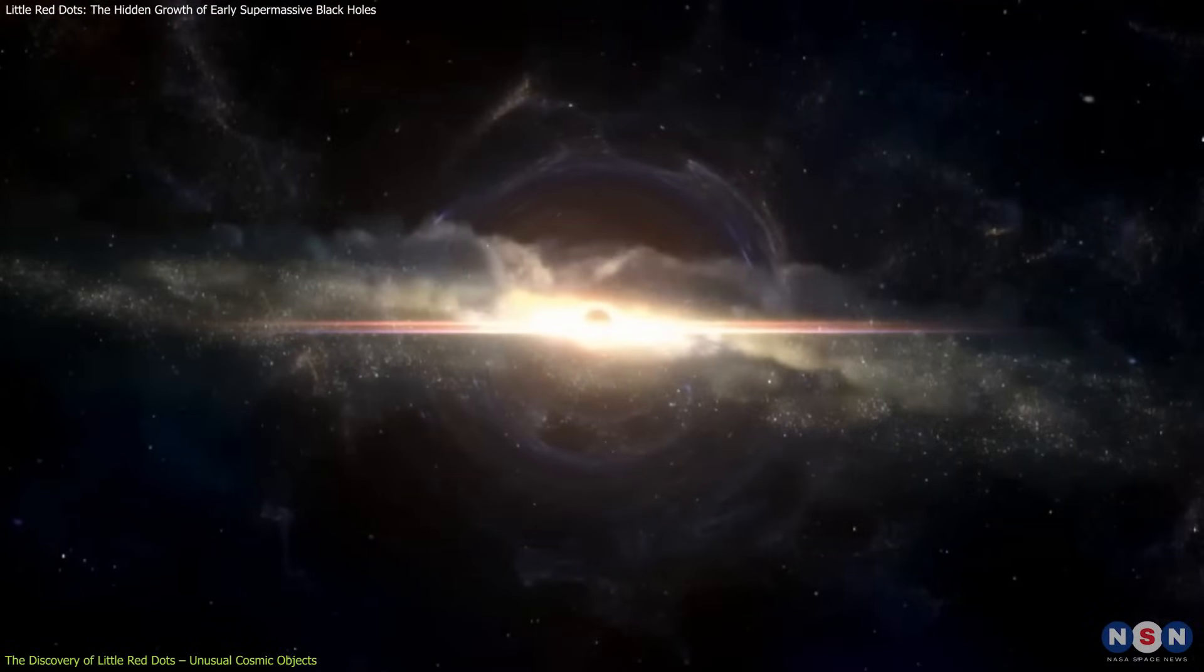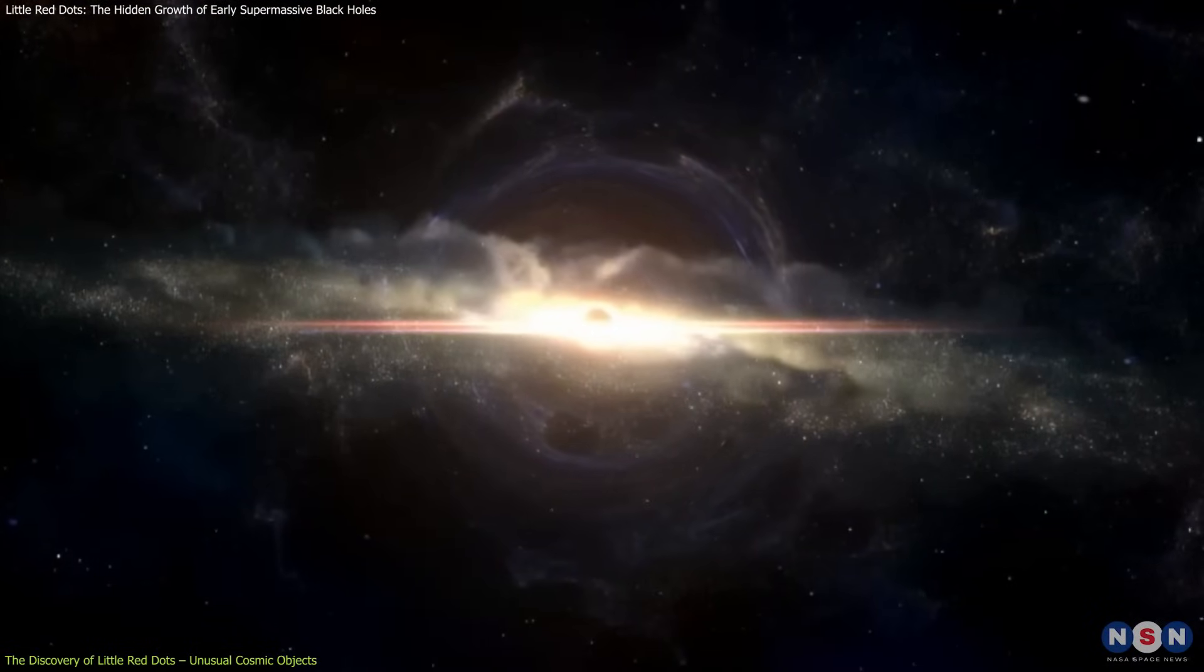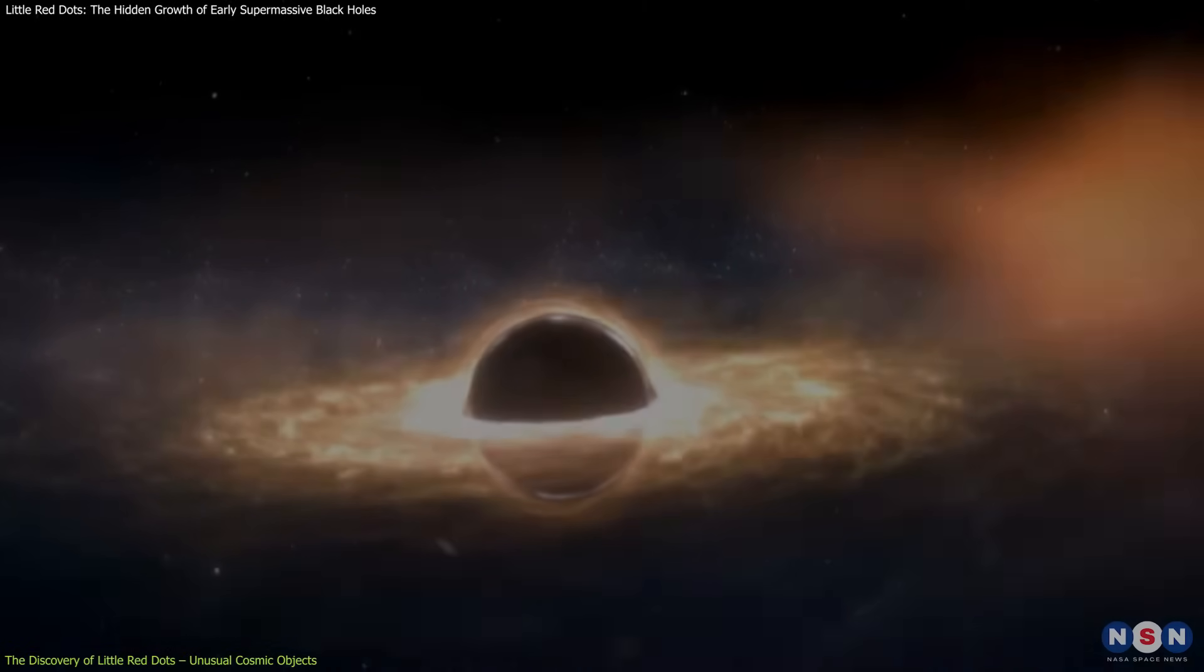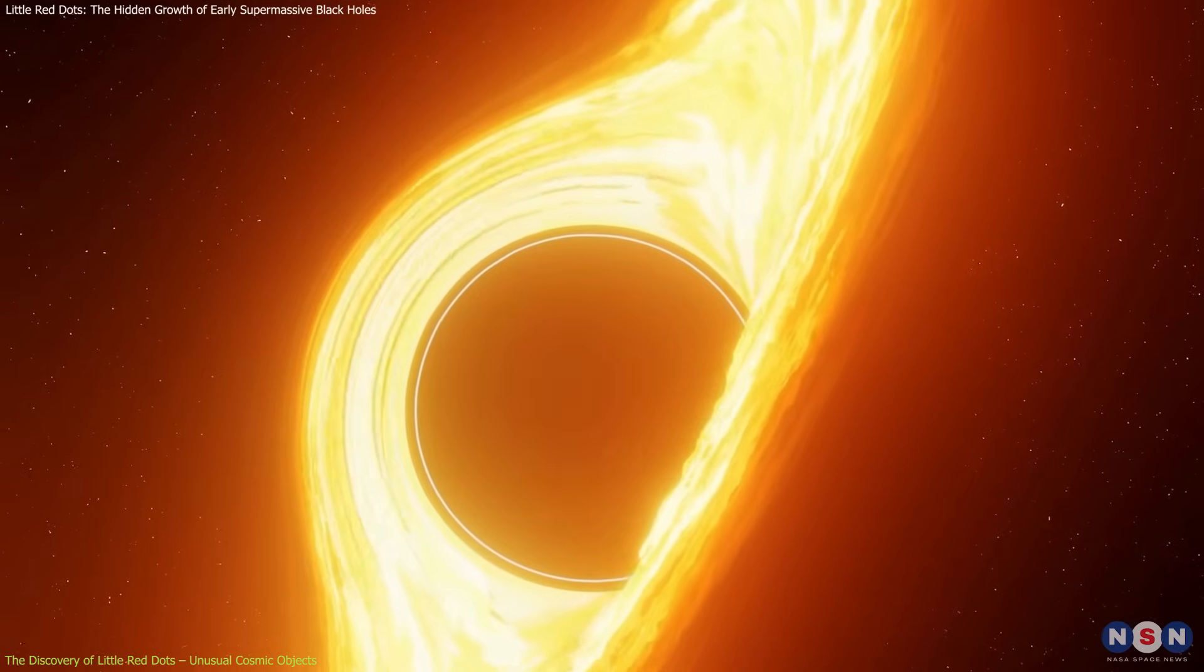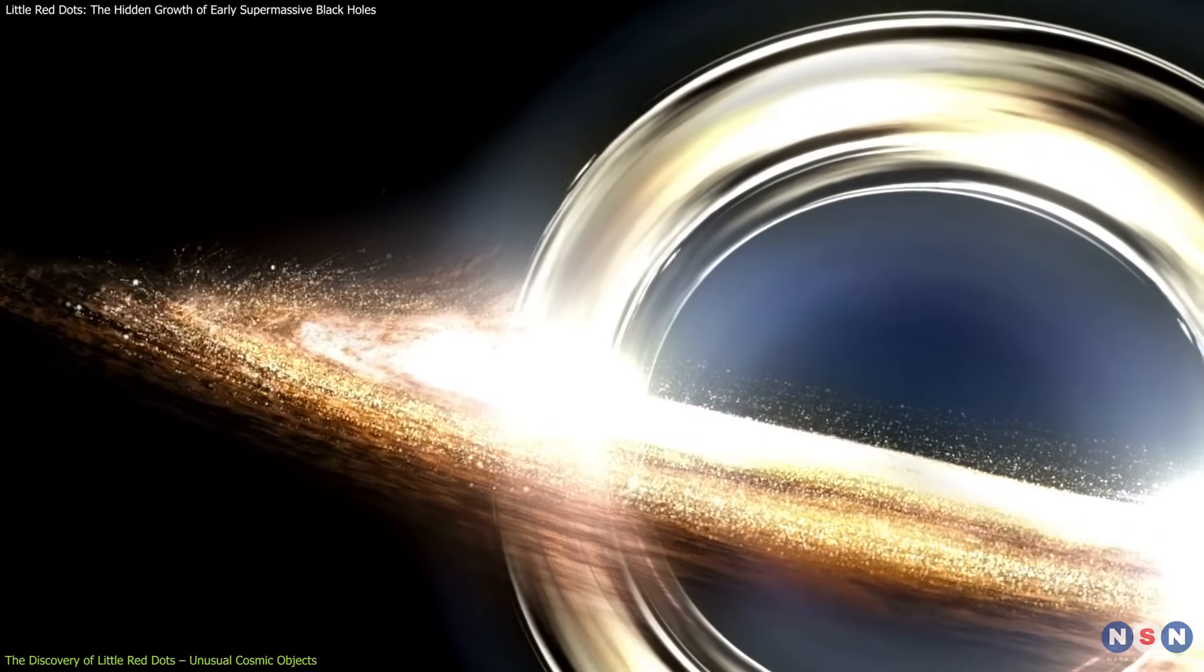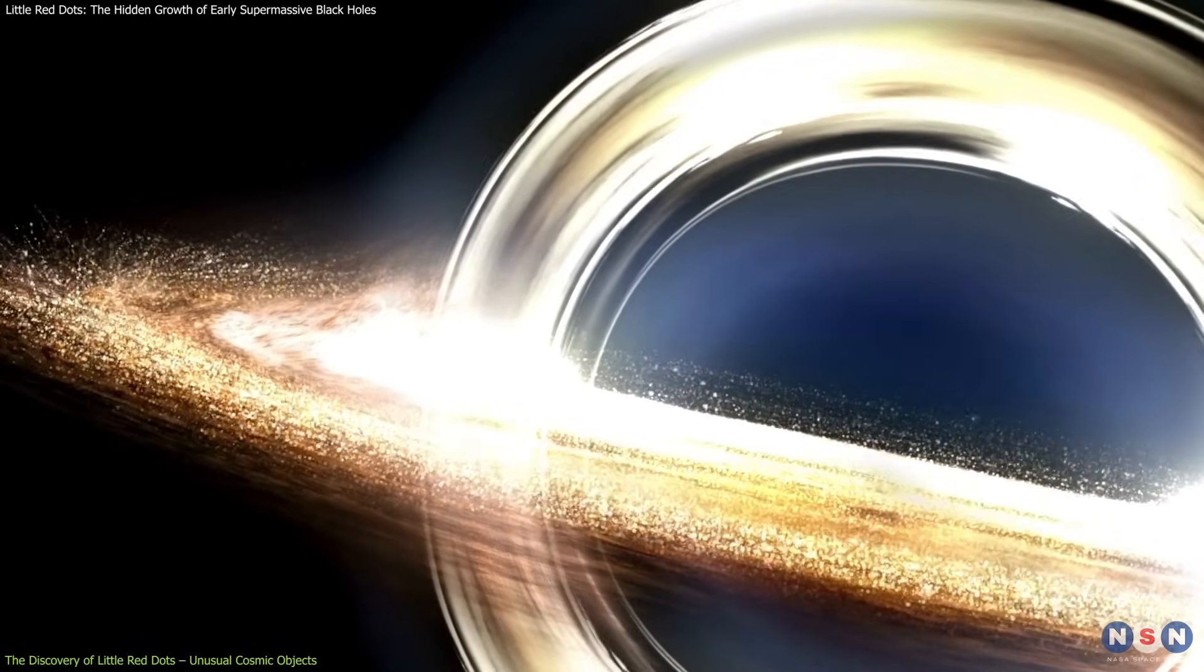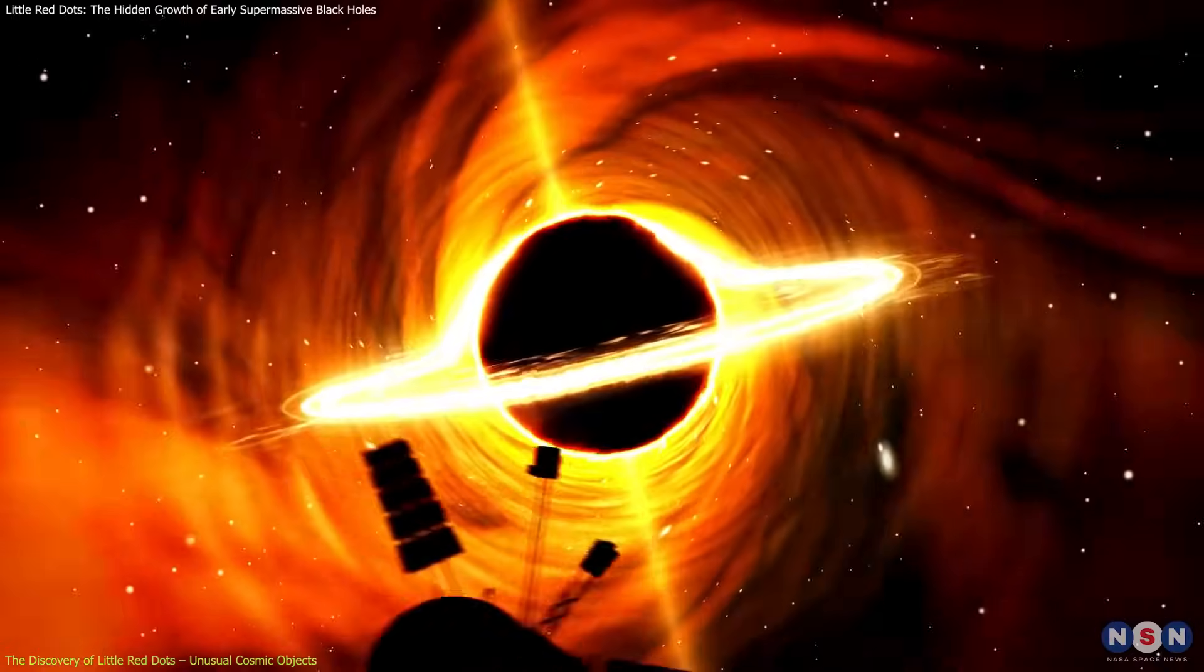This is highly unusual because growing galaxies typically contain active supermassive black holes, AGN, which shine brightly in these wavelengths. Scientists were puzzled by this contradiction. How could objects that appear similar to AGNs be missing key emission signatures?